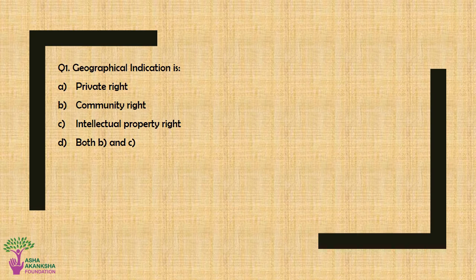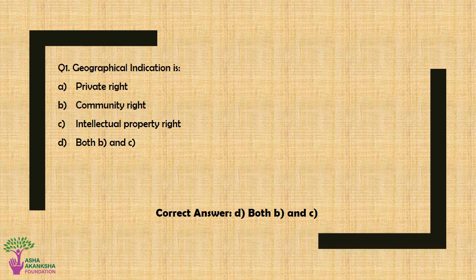Question No. 1: Geographical indication is — Option A: Private Right, Option B: Community Right, Option C: Intellectual Property Right, or Option D: Both Option B and Option C. The correct answer is Option D — Both Community Right and Intellectual Property Right.